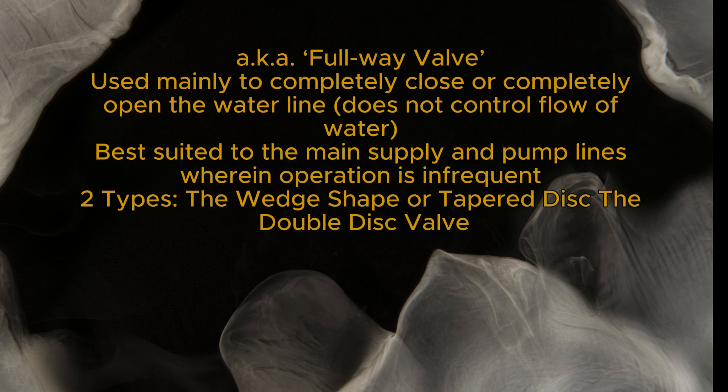The gate valve, also known as a full-way valve, is used mainly to completely close or completely open the waterline. It does not control the flow of water and is best suited to the main supply and pump lines where operation is infrequent. Two types: the wedge shape or tapered disc, and the double disc valve.